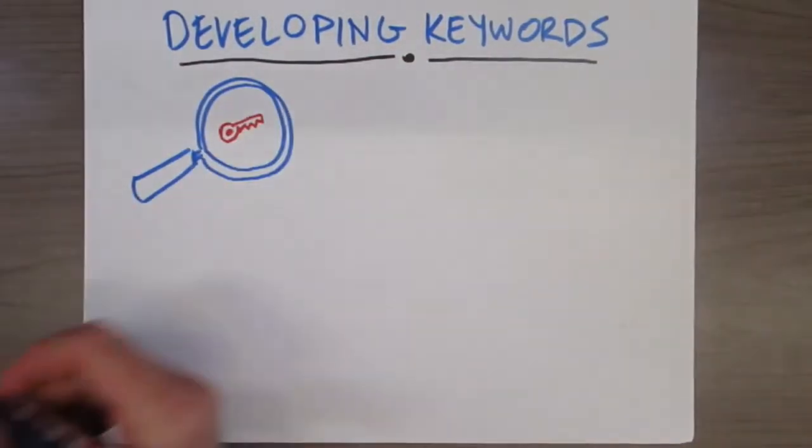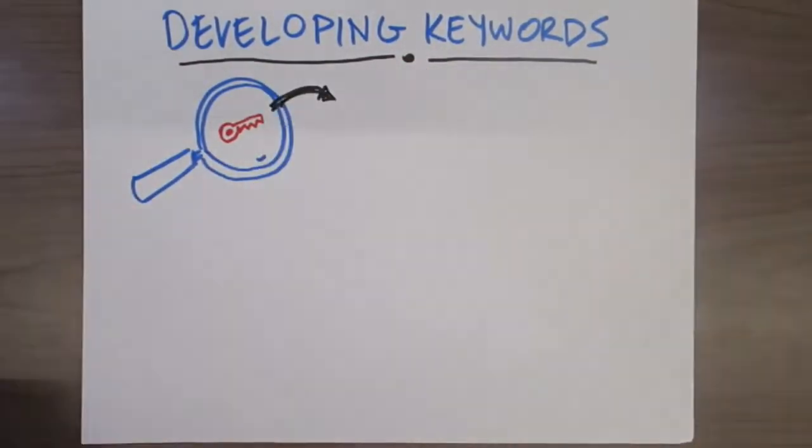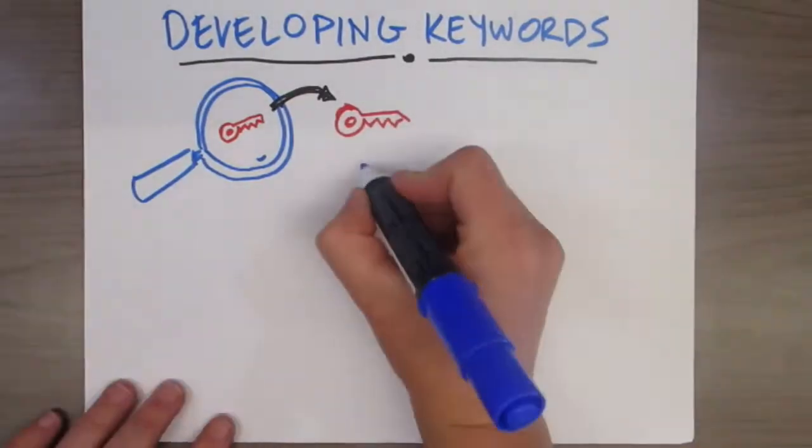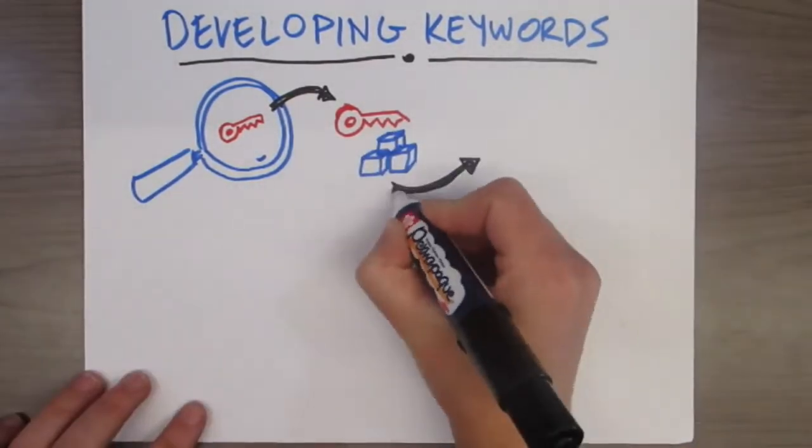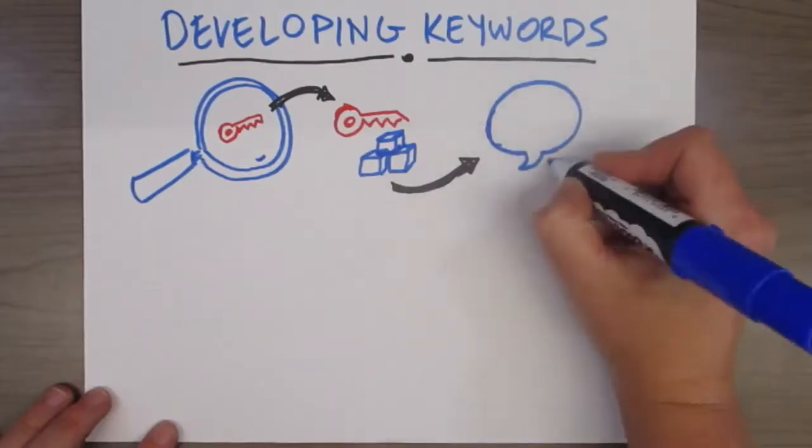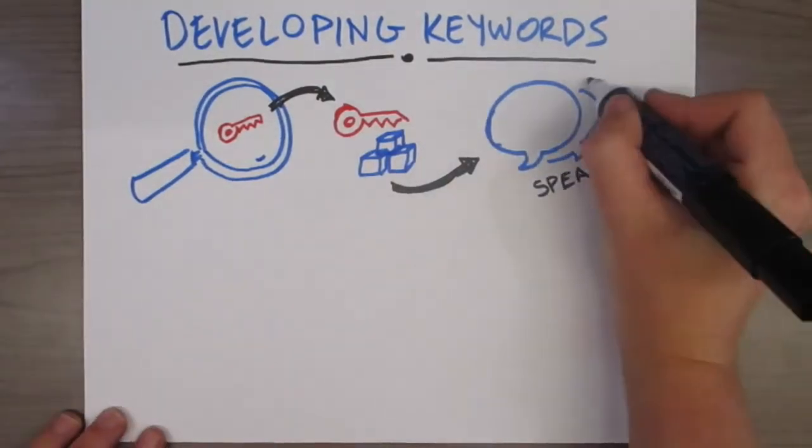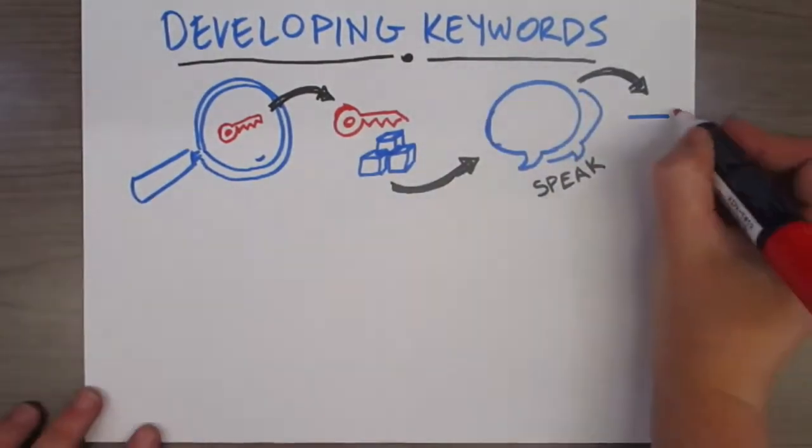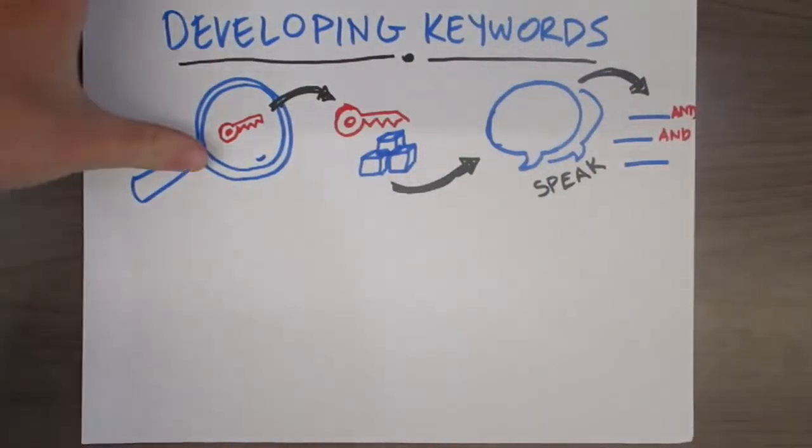Keywords are the building blocks of how you will conduct your search in library resources. When searching for books and articles on your topic, you need to speak the same language as the tools you are using, which means we have to break our ideas into key concepts or keywords rather than using everyday speech.